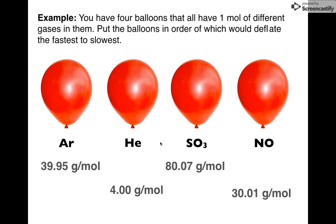So which of these is going to have molecules moving faster? So if it were to be deflated, okay, it would go faster than the rest. You've got it right here. Helium would be first. Then what would be next? Nitrogen monoxide. Then argon. And then finally, sulfur trioxide.